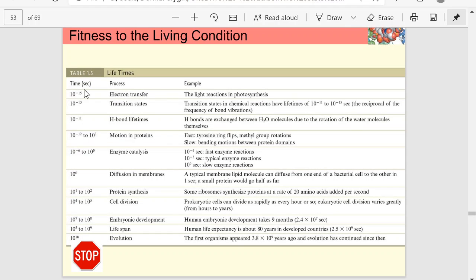Electron transfers are 10 to the negative 15. Transition states in chemical processes are 10 to the negative 13 or so, on the order of magnitude of 10 to the negative 13 seconds. Hydrogen bond lifetimes—these are very transient bonds—10 to the negative 11. Motions in proteins, 10 to the negative 12 to 10 to the 3rd seconds, so about 1,000 seconds.